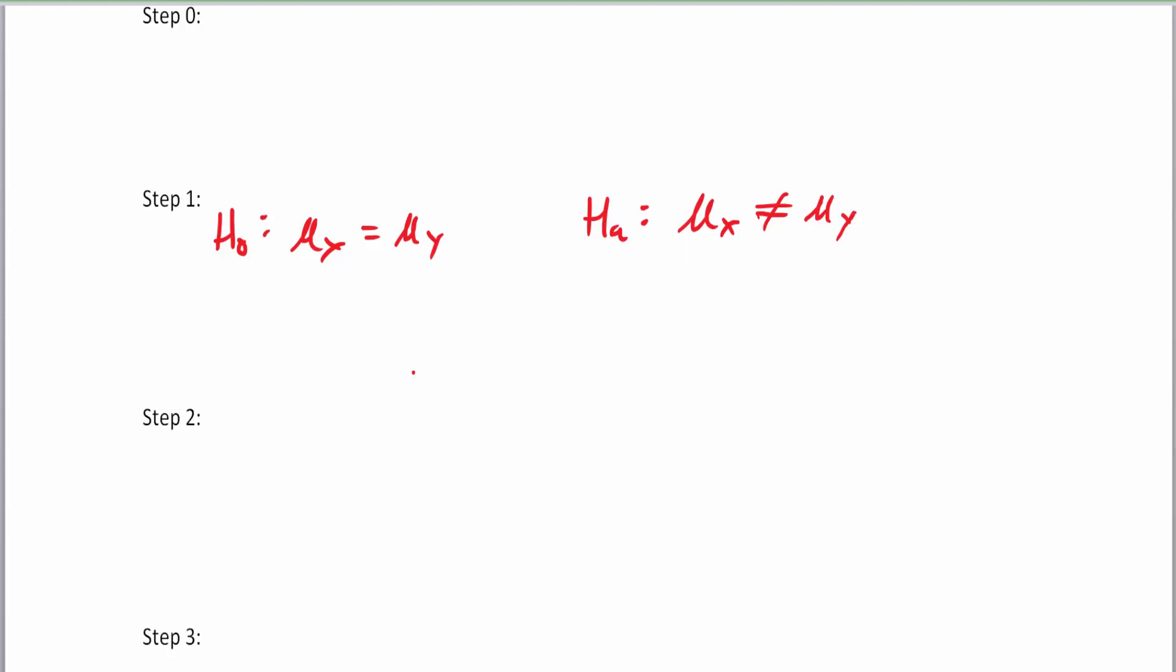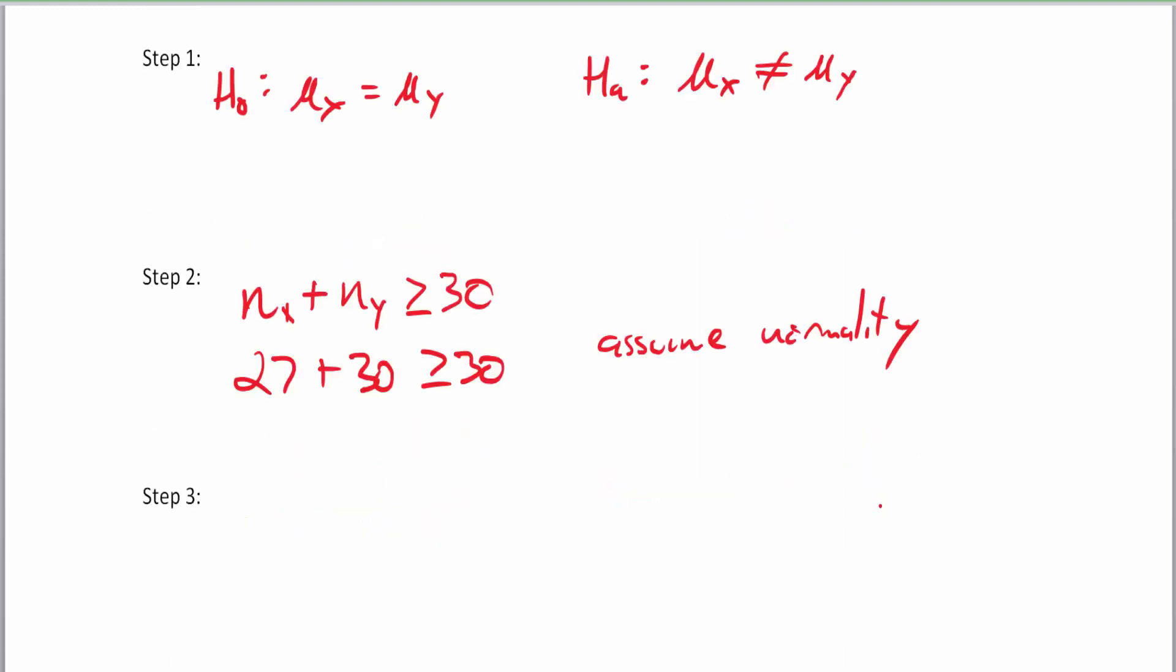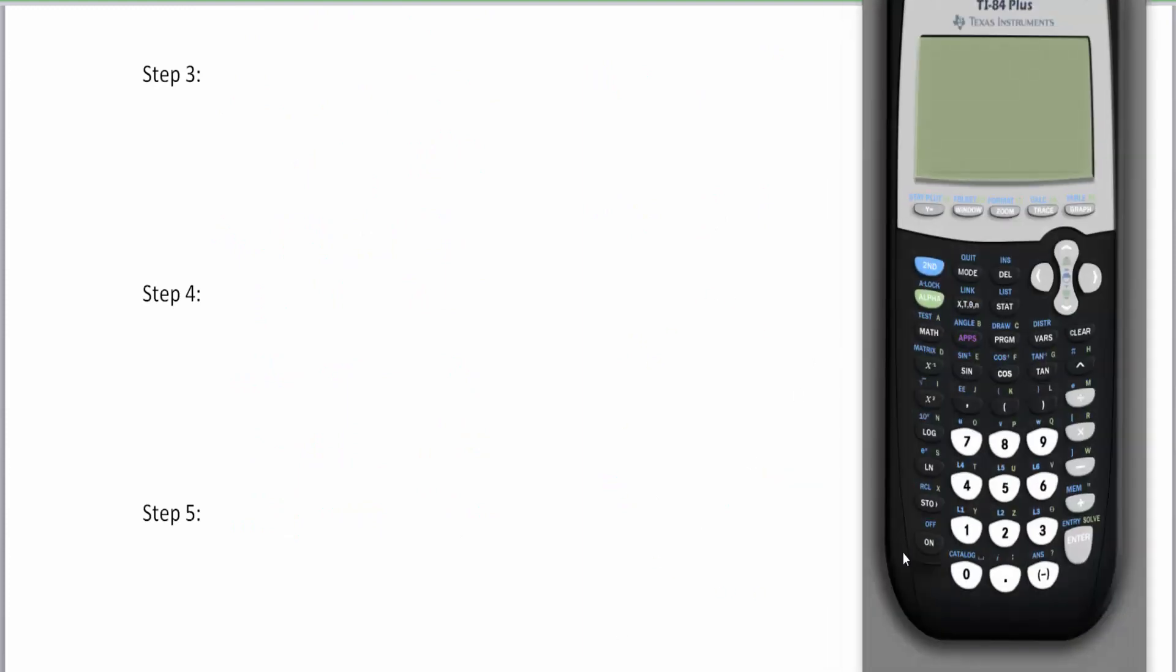So let's go to step two. Our n sample size of our first group and our n sample size of our second group, which I can label as X and Y, is it greater than or equal to 30? And the answer is yes, because 27 plus 30 is definitely greater than or equal to 30. So we can assume normality and use our Z test. Now we're on to step three. Let's be careful as I type in the data.